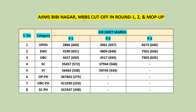Let's see here: AIIMS MBBS cutoff in Round 1, Round 2, and Mop-up round. There are three rounds. Now, if you have any variation in these three rounds, I have only AIIMS for three rounds. For government colleges, they are up to Round 2 only. So this is one college — it is easy.